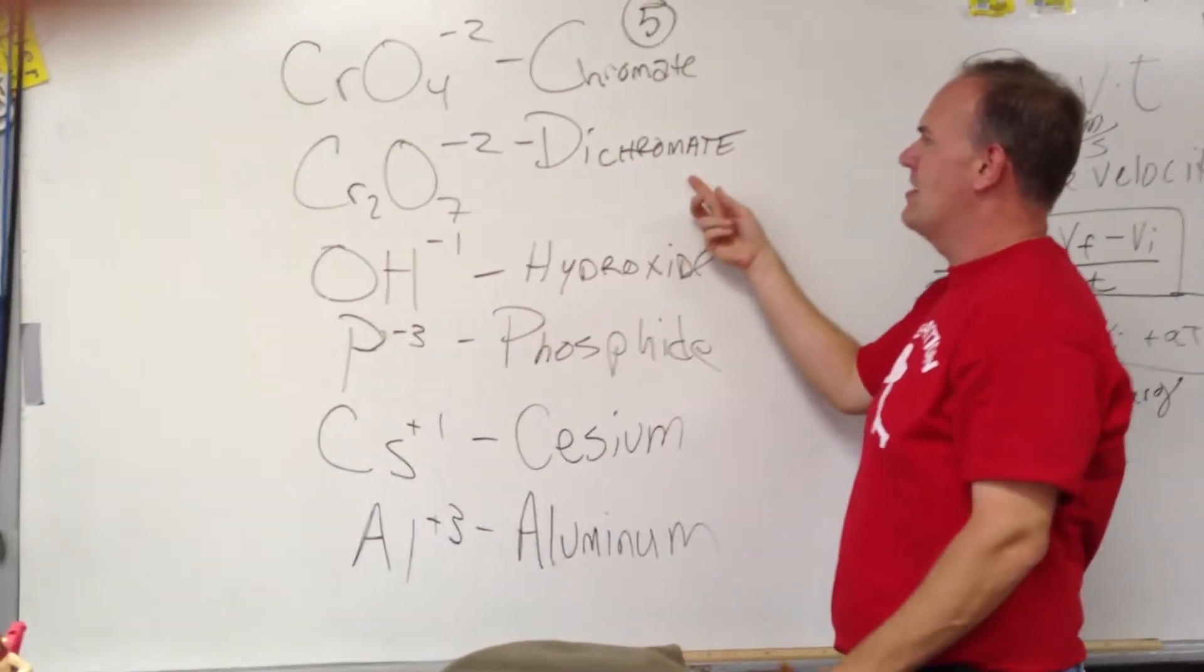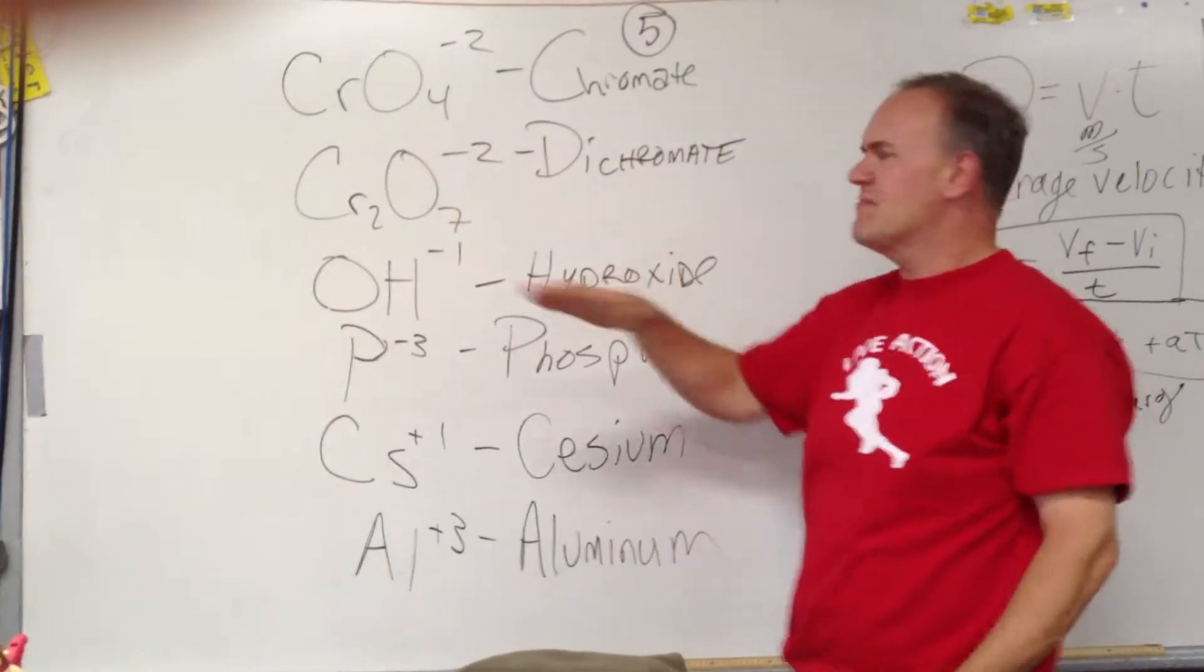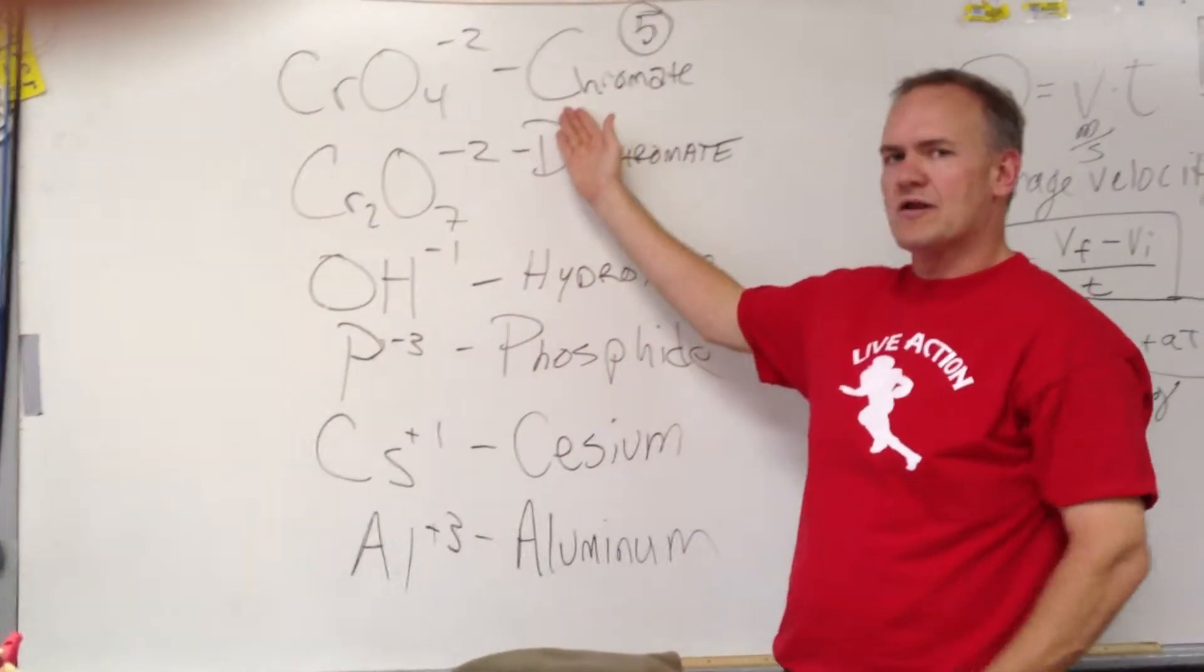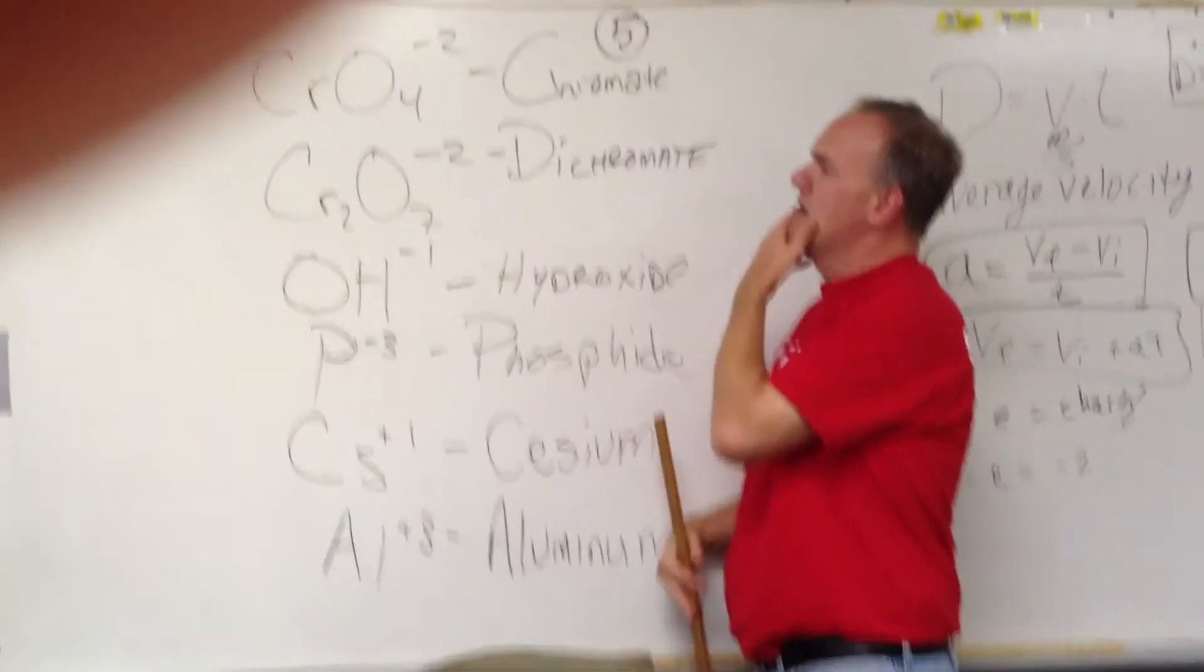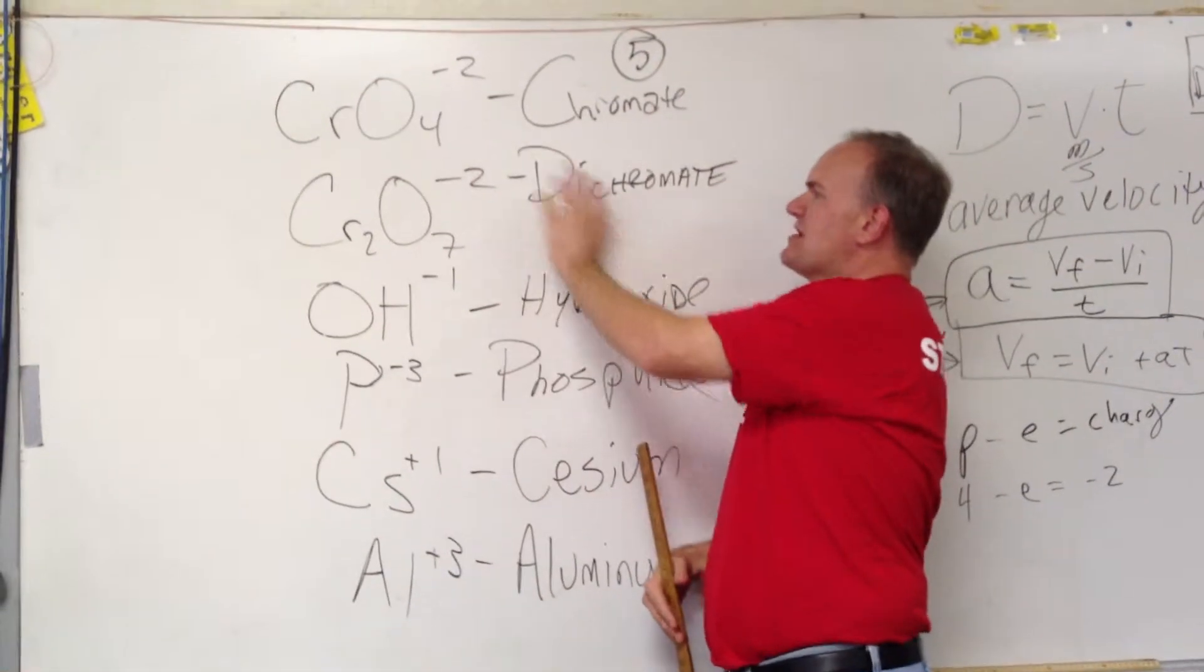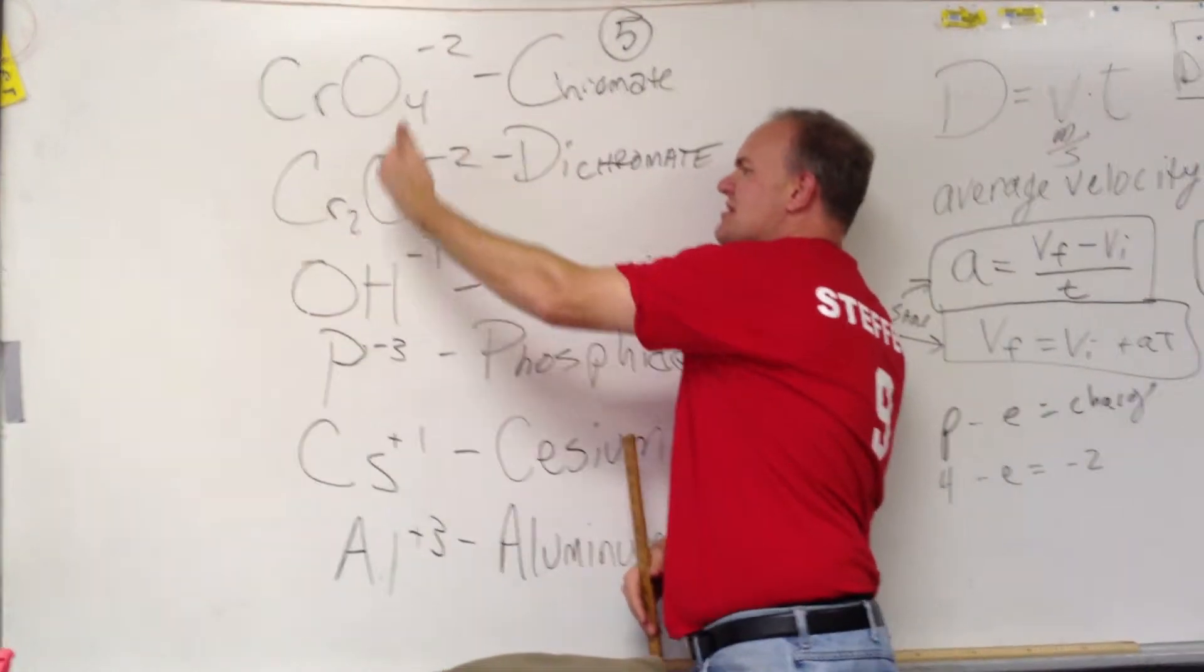But this one has one and this one has two. So obviously this is the one that's dichromate. You'll probably remember that there's two chromiums here and one here. The problem comes with the charge and the oxygen number. There's not really a trick to it because you'd say, well, you double everything to get here.